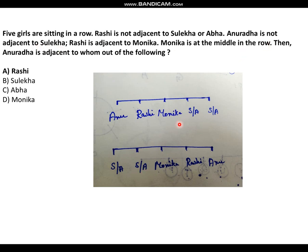In the first possibility, Suleka and Abba cannot be on the left side of Rashi, so they go to fourth and fifth positions. In the second possibility, Suleka and Abba go to first and second positions. Anurada is not adjacent to Suleka, so Anurada's position is next to Rashi in both possibilities. The question asks who Anurada is adjacent to — obviously Rashi. We don't need to determine Suleka and Abba's exact positions since the question is already answered.